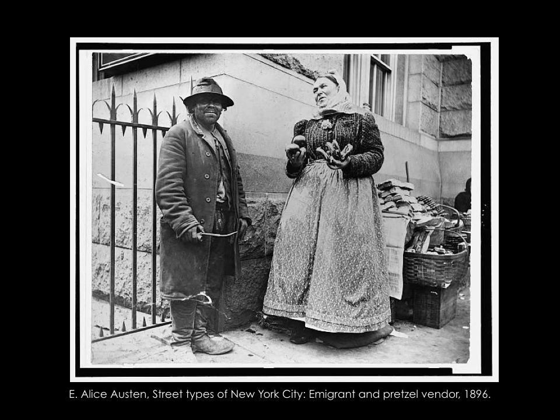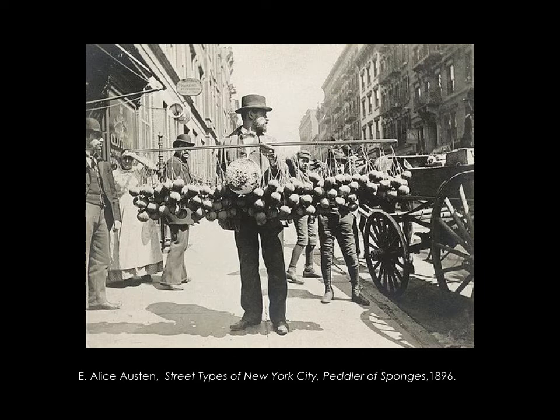Here we see a rag picker, an immigrant and pretzel vendor, and a peddler of sponges. These give a great view of what the streets actually looked like in New York at this time — the kinds of things people were wearing and the kinds of things people were buying and selling.